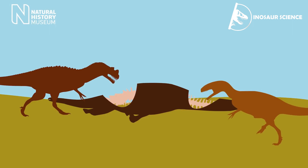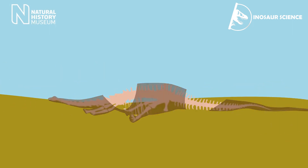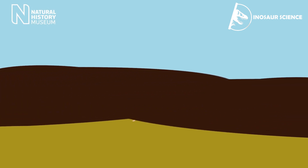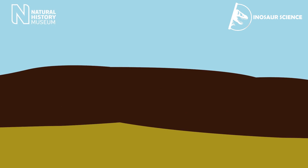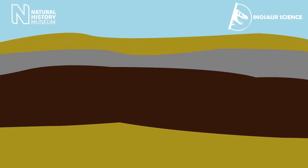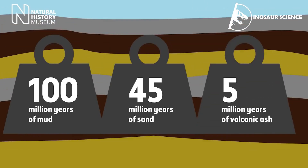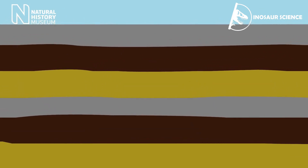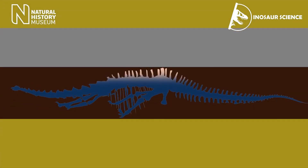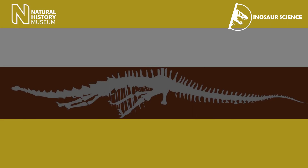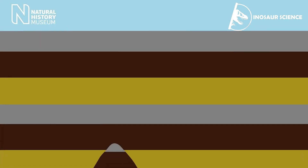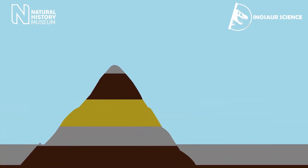First, soft tissue that exists during life decays, leaving behind only the hard parts — bone, shell, and teeth. Second, hard parts may be transported and broken, causing fossilized remains to be incomplete representations of the living animal; it is much more common to find a fragment of shell or bone than a complete skeleton. Third and most importantly, hard tissues become buried and altered. In most cases this involves destroying the original material as minerals are slowly dissolved and replaced by new ones. Often a hard part is dissolved without being replaced, leaving behind only an impression or mold of the original animal. If this mold is filled with sediment that is later cemented into rock, it will make a cast of the original animal.